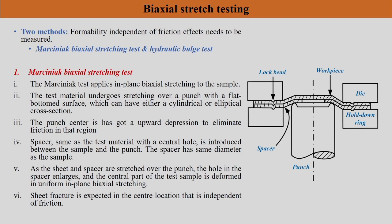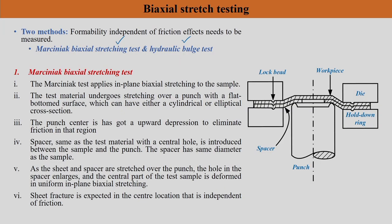Biaxial stretching testing — also called Marciniak biaxial stretching — and the hydraulic bulge test are two different types of tests. These tests are important because in the limiting dome height test or hemispherical punch test, the limit strains are dependent on friction at the counter-face, since the punch and sheet are in contact where fracture occurs. To avoid this friction influence, two methods are used: the Marciniak biaxial stretching test and the hydraulic bulge test.